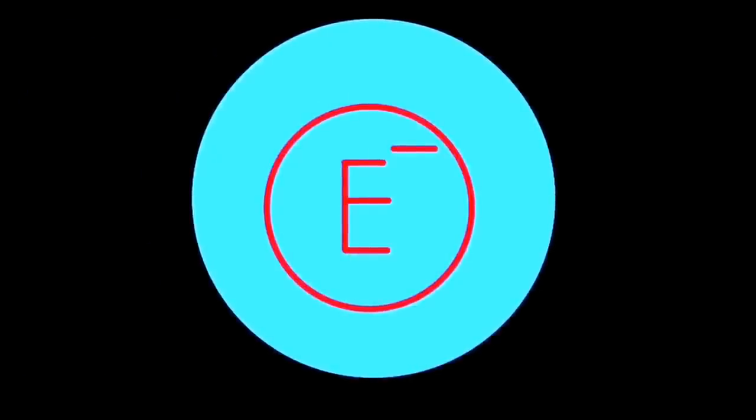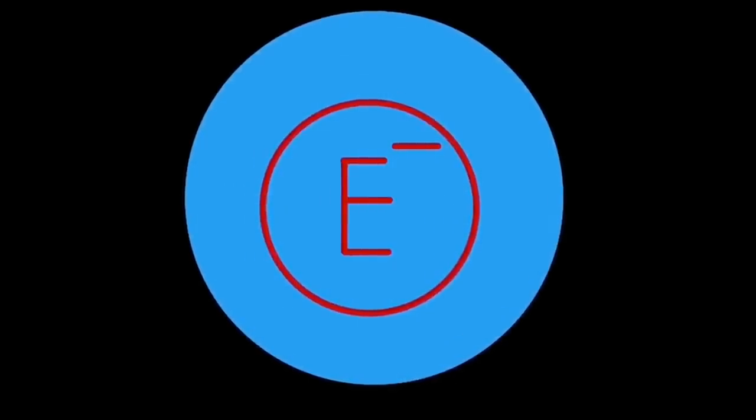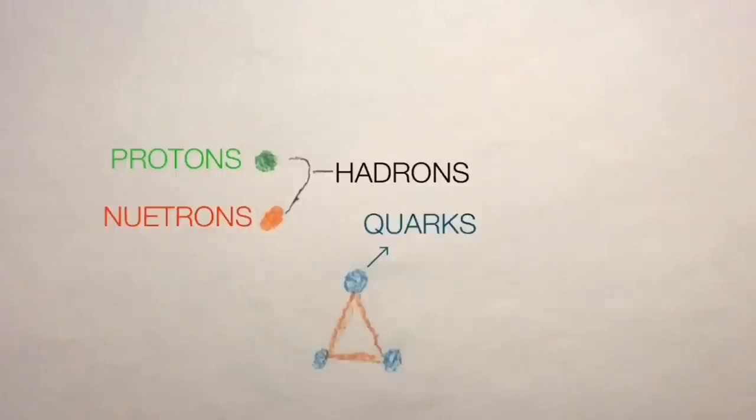So, now that we're done talking about the electrons, let's now take a look at the protons and neutrons that make up the atomic nuclei. Protons and neutrons are hadrons or a class of subatomic particles that are made up of even smaller subatomic particles called quarks and gluons.